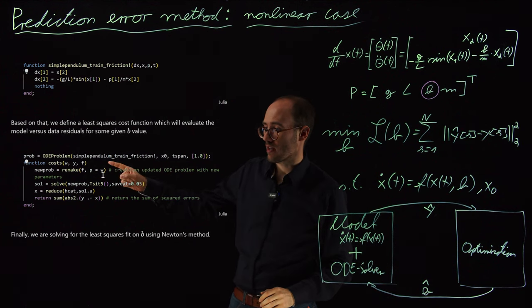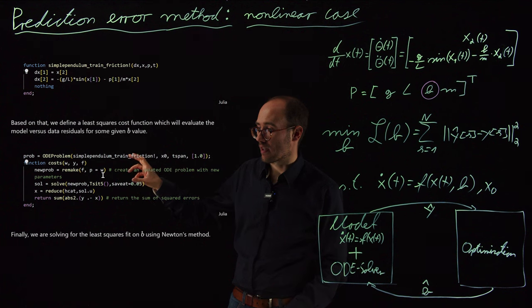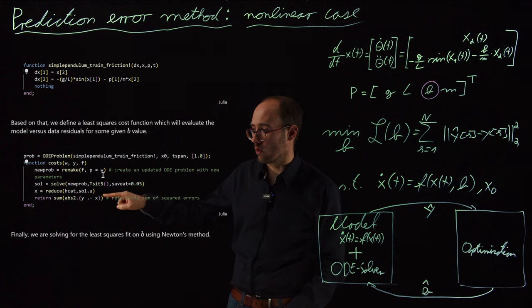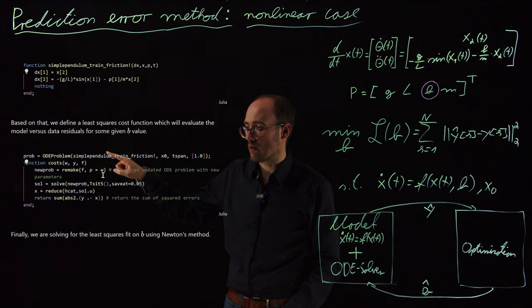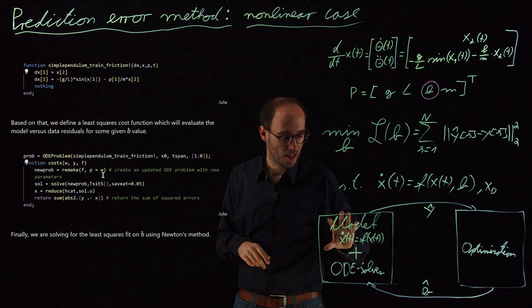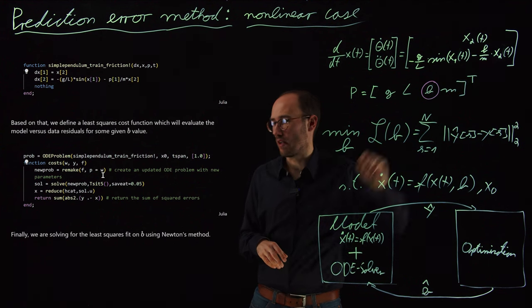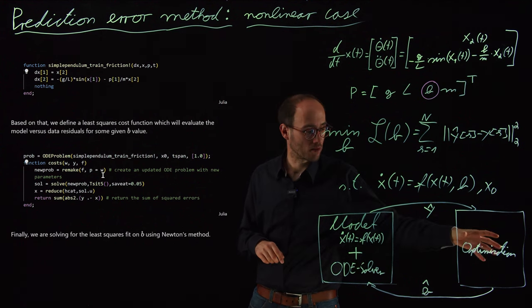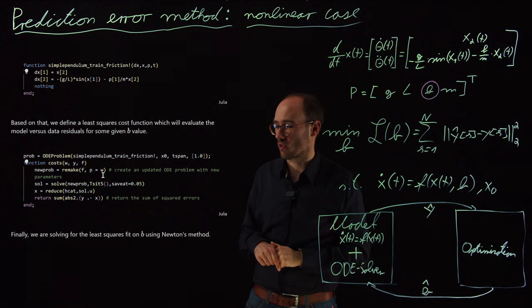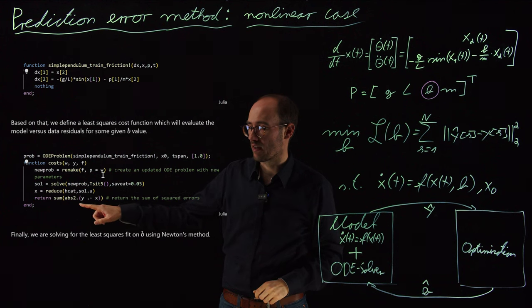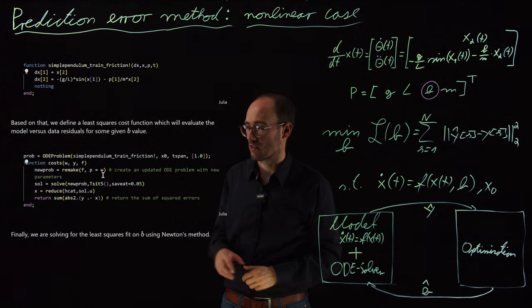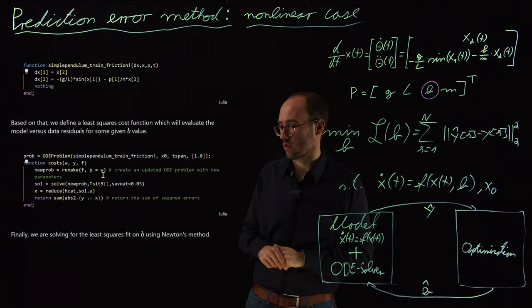So our cost function is now basically in combination of our ODE solver, which we can see here. This ODE solver is then also updated based on new parameter guesses. So this remake function is basically updating the internal model for different B values, which we're going to optimize or train with the optimization solver. And then based on the solution of the ODE solver, we can return the sum of the squared errors as we have denoted here in our cost function.